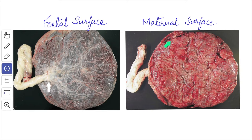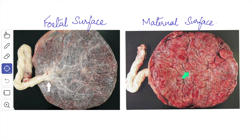The maternal surface is rough and irregular, and it is mapped out into 15 to 30 polygonal areas which are known as the cotyledons. These cotyledons are limited by the fissures, and each fissure is occupied by the placental septum.